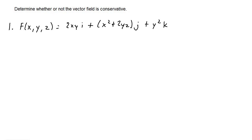The next problem involves determining whether or not a vector field is conservative. When we have three variables x, y, and z, the test is to find the curl of F. If the curl of the vector field F equals zero, then the vector field is conservative.